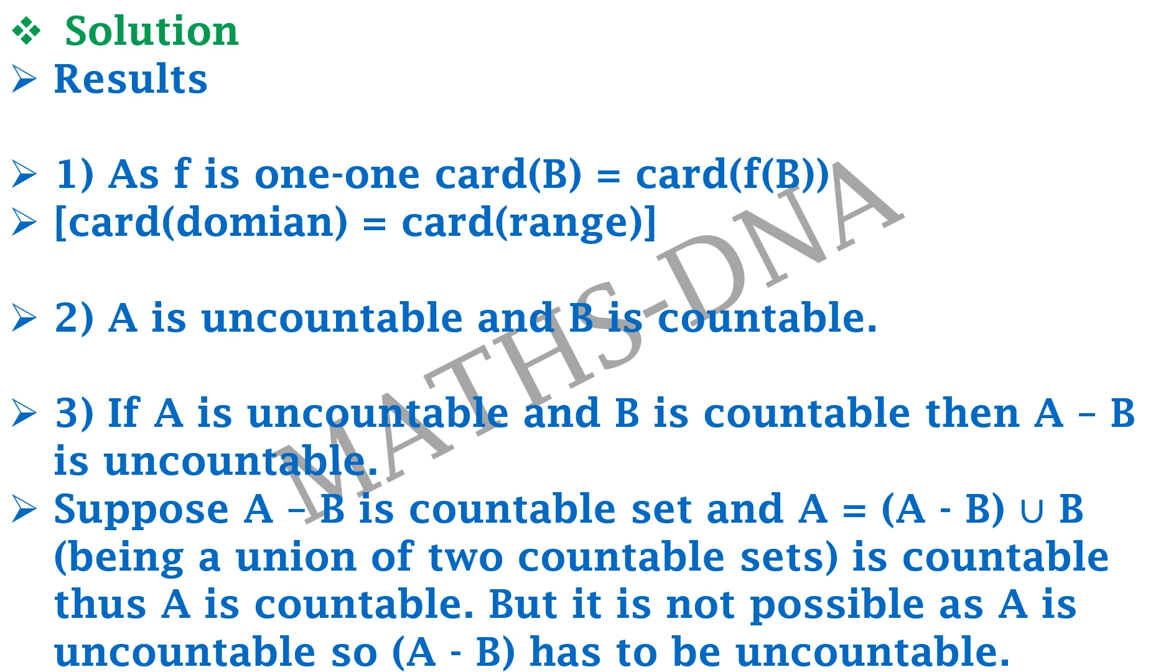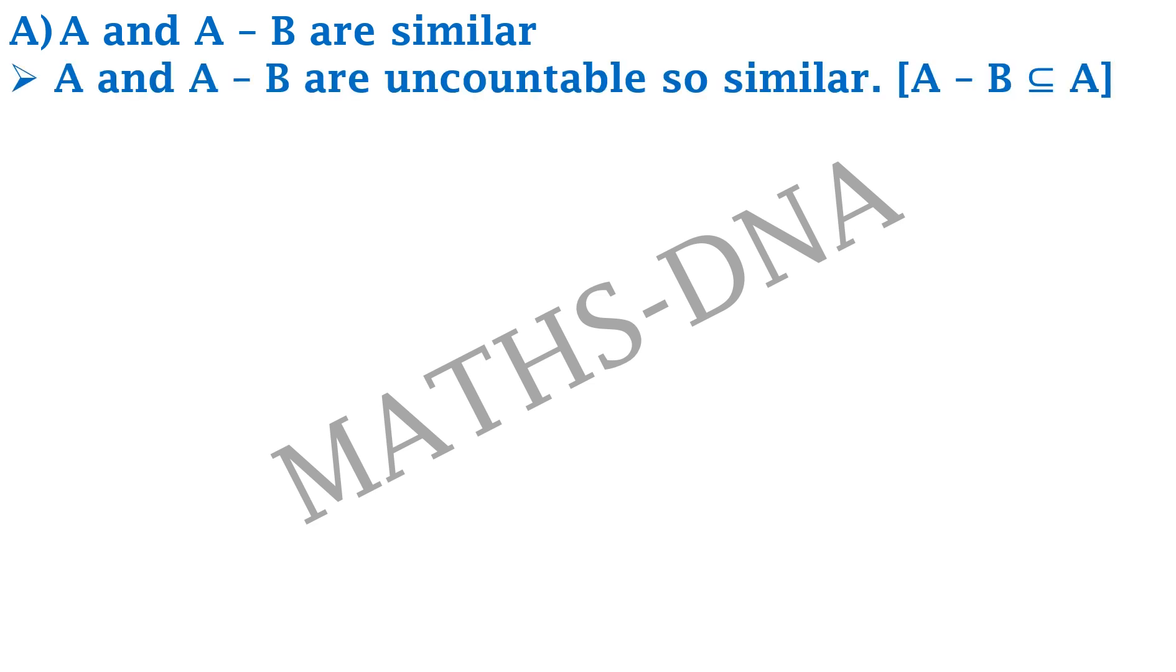With the help of these three results we will be solving our question. Now let us move on to the first option. It says A and A minus B are similar. Using our last result, A and A minus B are uncountable and so they are similar.